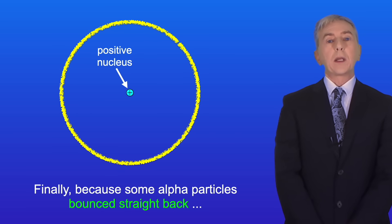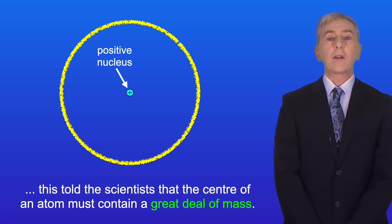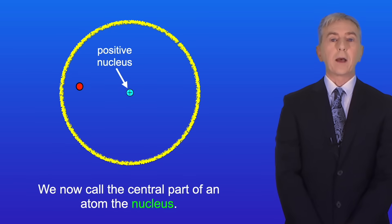And finally, because some alpha particles bounce straight back, this told the scientists that the center of an atom must contain a great deal of mass. We now call the central part of an atom the nucleus.